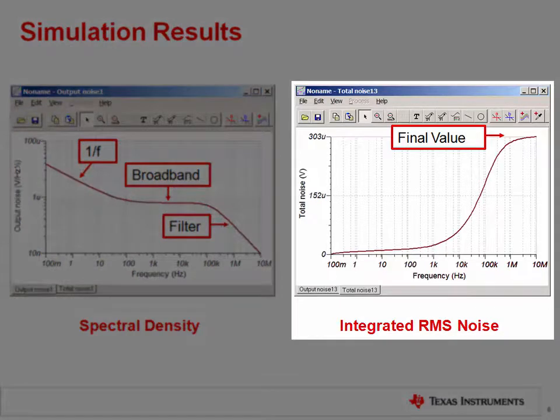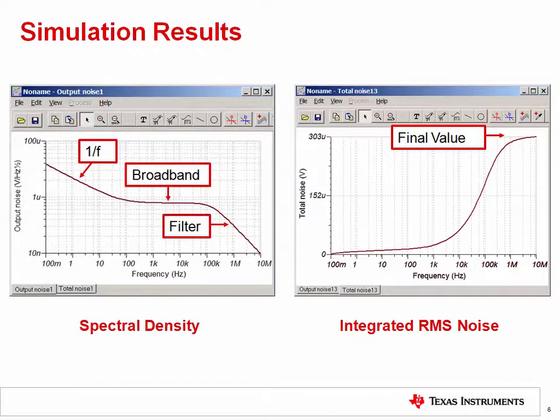The graph on the right is the integrated RMS noise called total noise by TINA-TI. This graph is calculated using the same equations introduced in the hand calculation section. That is, the voltage noise spectral density is squared, integrated across frequency, and the square root is taken on the result.